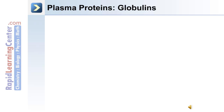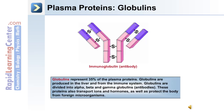The second major class of proteins in the plasma are the globulins. These represent 35% of the total plasma proteins. They're produced in the liver and for the immune system. Globulins are divided into alpha, beta, and gamma globulins, or antibodies. These proteins can also transport ions and hormones, as well as protect the body from foreign microorganisms as part of an immune reaction.